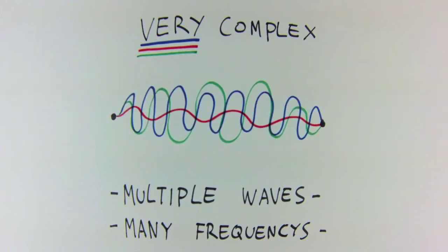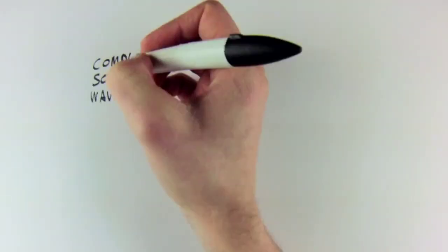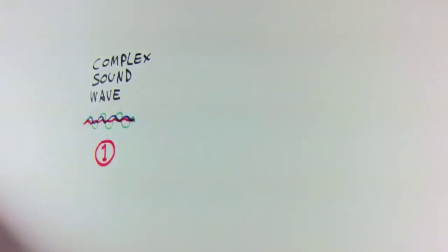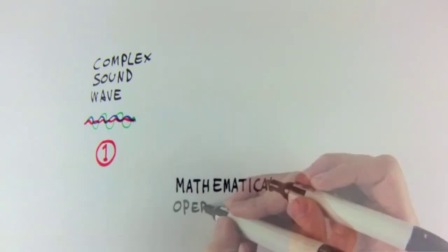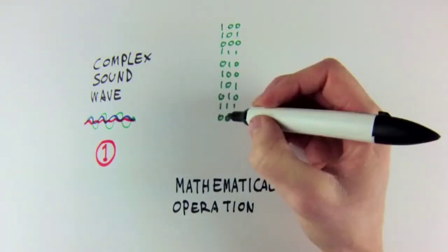say, an A sound and an E sound. Which is easy for you and I, but is in fact a rather complex task for a computer. More mathematical operations transform the complex wave into a numerical representation of the important features needed to differentiate the various sounds.